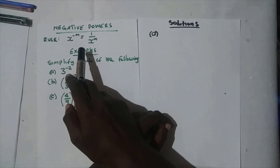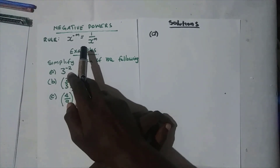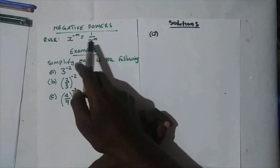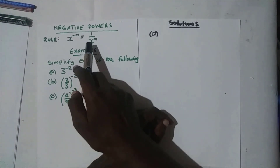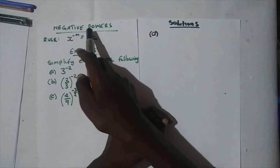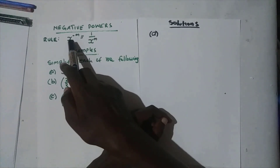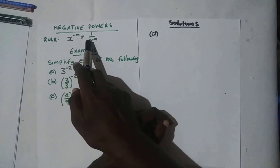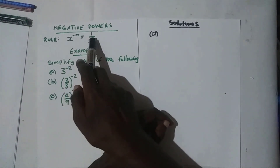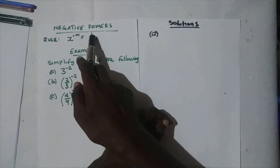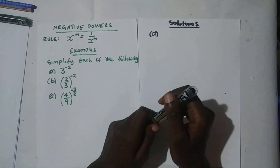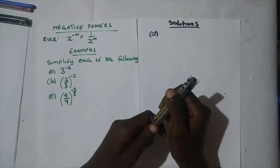You write its reciprocal, as written here. We say one over x to the power m — the m becomes positive because you take the reciprocal. Now let's look at the following examples to try and understand what we have here.